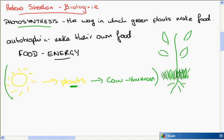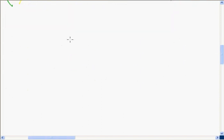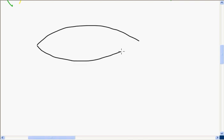What can't happen? The cow cannot get energy from the sun — only the plant can do that. The difference between the cow, or the animal, and the plant is that the plant contains chlorophyll. If you recall the video on the structure of the cell, I mentioned that the plant cell contains something called chloroplasts. So let's have a look at a leaf.